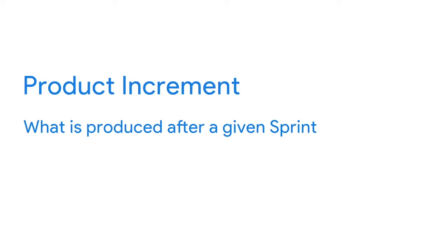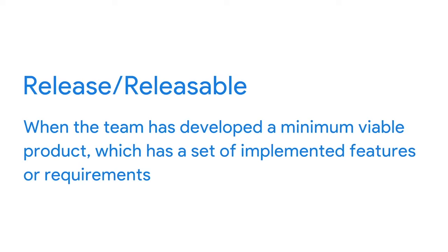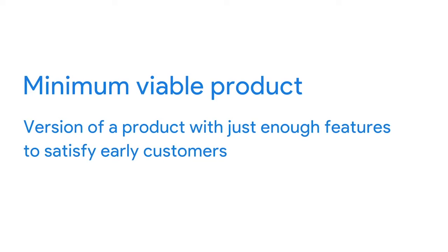A product is releasable when the team has developed a minimum viable product — a version of a product with just enough features to satisfy early customers. At the end of each sprint, only items that have met the definition of done are considered part of the product increment. Anything that is not done goes back to the product backlog.